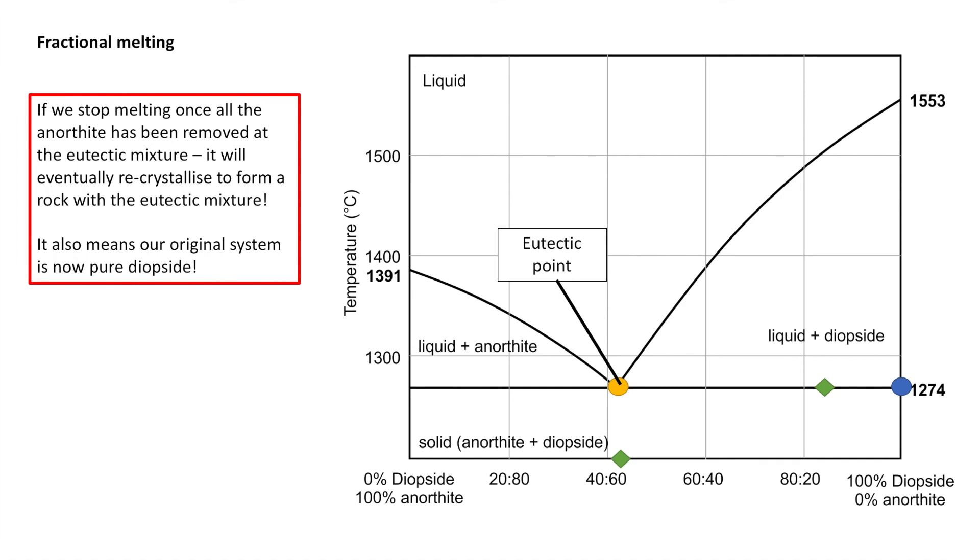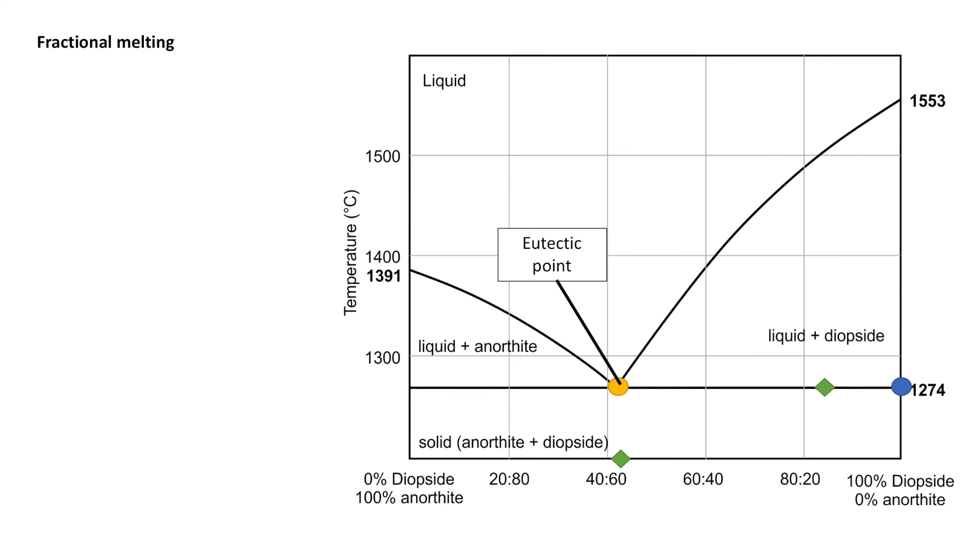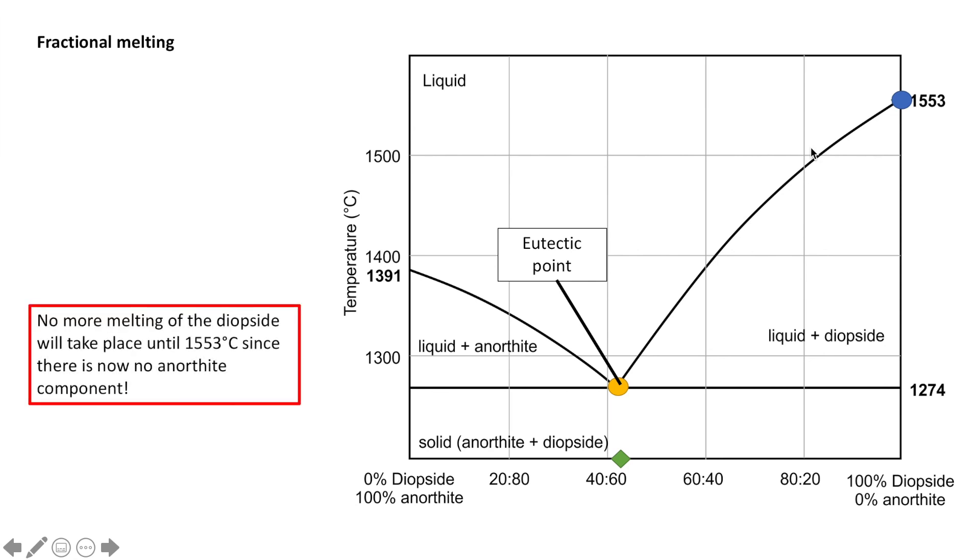What about our original system? Our original system is now essentially 100% diopside, right? So we're going to shift it over to the right-hand side of the diagram and that is going to stay solid until it reaches 1,553 degrees where the diopside will begin to melt. Because if you remember from our definition at the start, the eutectic point is a melting point lower than the constituents within that phase diagram. So actually the diopside is going to stay solid all the way up this because we no longer have an anorthite component to drive the system this way. So no more melting will take place because now there is no anorthite component.